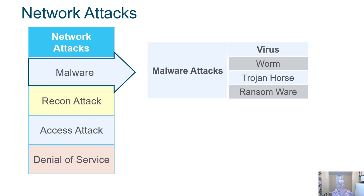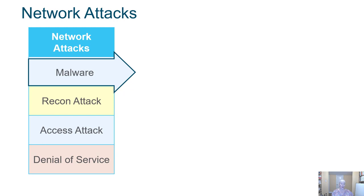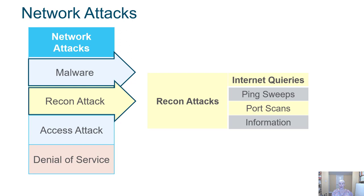Malware includes things like viruses, worms, Trojan horses, and ransomware. A recon attack — reconnaissance attack — may not be an actual attack; it's more like gathering intel. The threat actor might do internet queries, ping sweeps, or port scans to see what ports are open, and they could even just call up and try to talk to an unsuspecting employee to gather information.